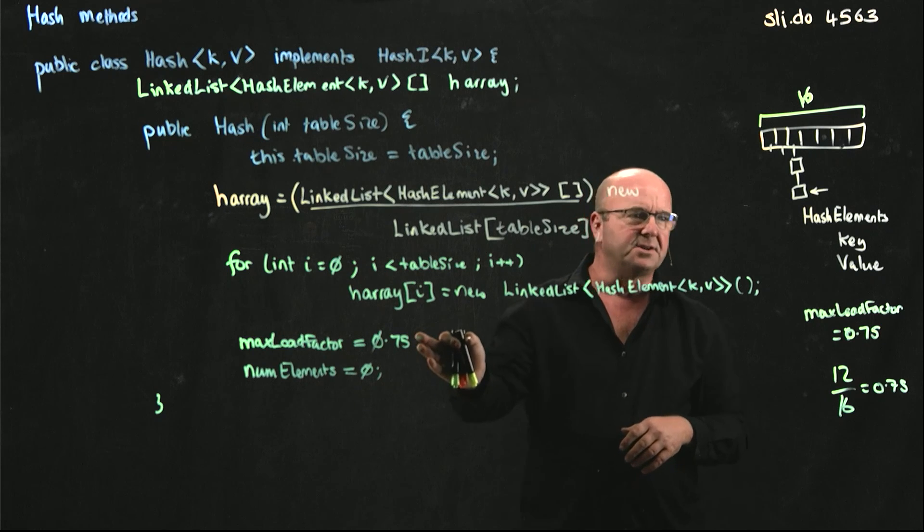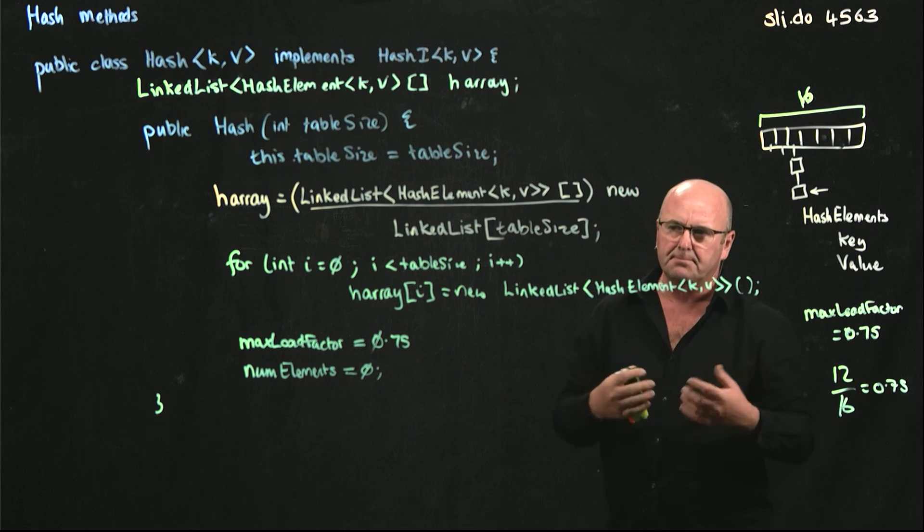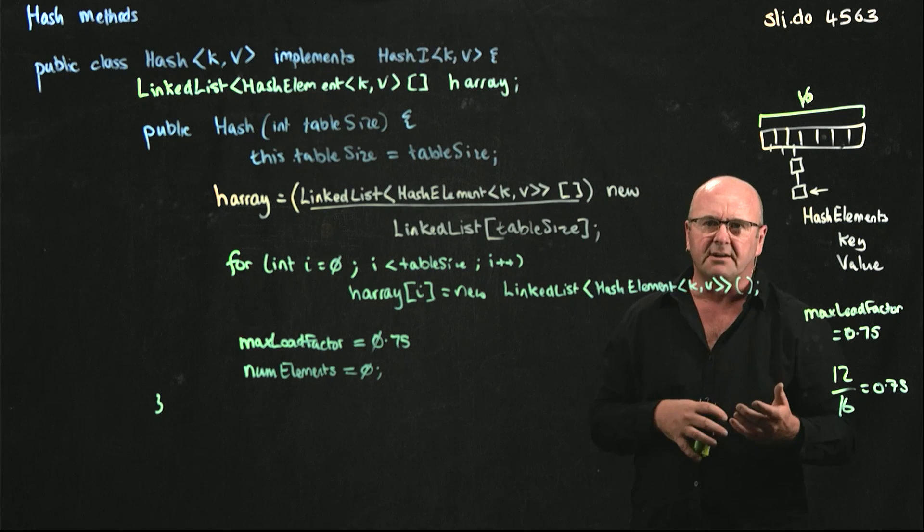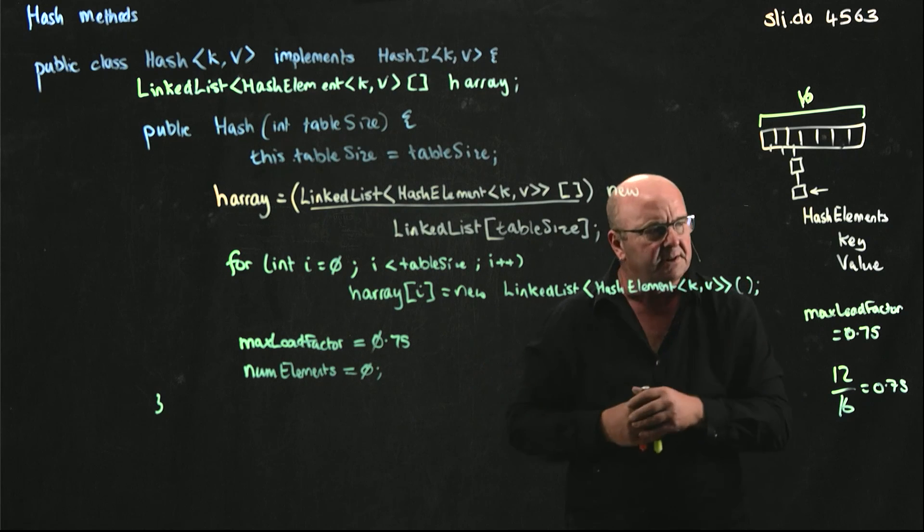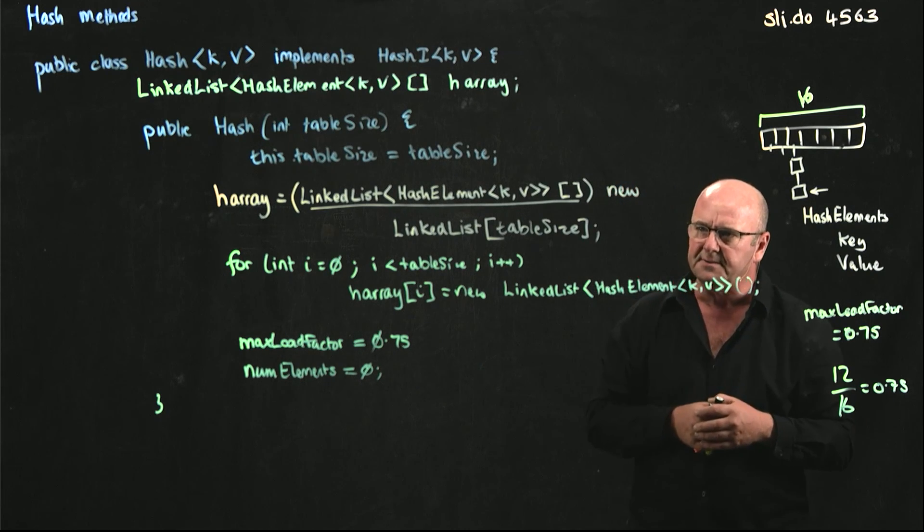0.75 is a good overall max load factor for a generic hash like the one that we're designing here, where we don't know what people are going to use it for.